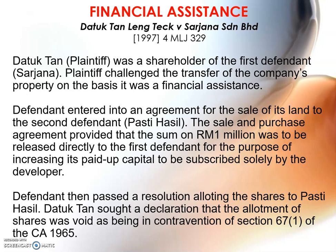There was a sale and purchase agreement where the sale price was 1 million. Under that agreement, the 1 million was to be released directly to Sarjana for the purpose of increasing paid-up capital. There is no problem when you sell off your land and receive money, but there was a trick here — the proceeds were meant for the purpose of increasing paid-up capital.